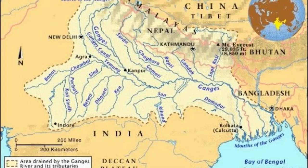The Ganga River Basin includes a large number of other rivers that are its tributaries, the major ones being Yamuna, Chambal, Gandak, Ghagra, Gomti, and Ramganga.